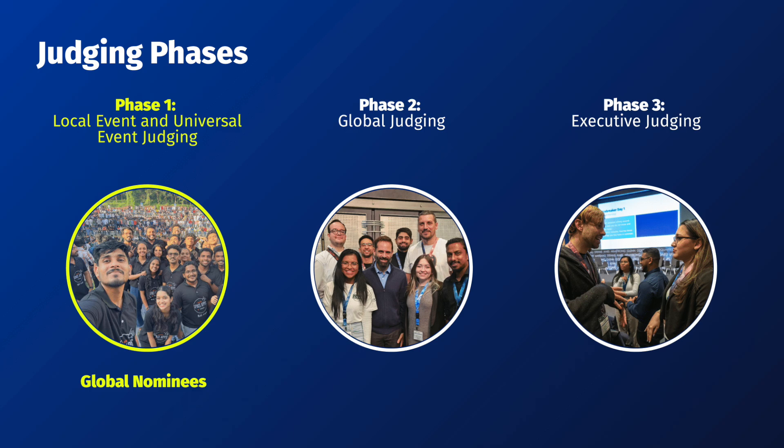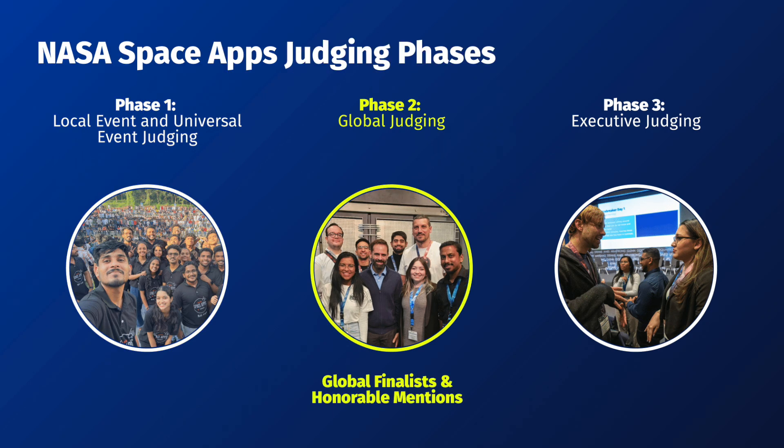NASA Space Apps judging occurs in three phases. Phase one is local event and universal event judging, where the global nominees are determined. Phase two is global judging, where the global finalists and the global finalists' honorable mentions are determined. Lastly, phase three is executive judging, where the global winners are determined.